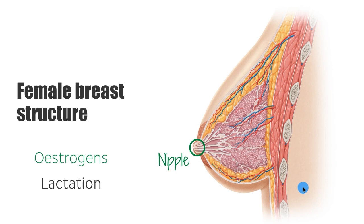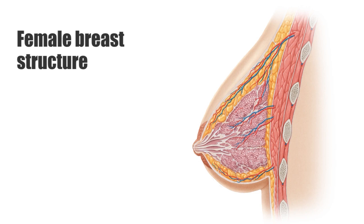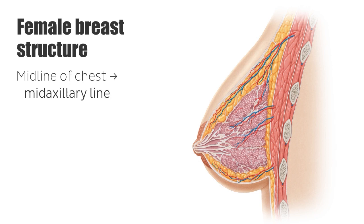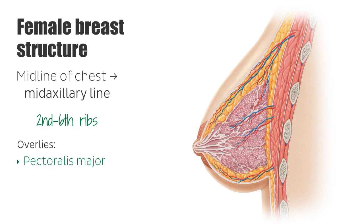The nipple is surrounded by a circular pigmented area known as the areola. The base of the breast is located from near the midline of the chest to the mid-axillary line and from the second to sixth ribs. It overlies the pectoralis major muscle and part of the serratus anterior muscle, and also overlies the rectus sheath and the external oblique muscles.